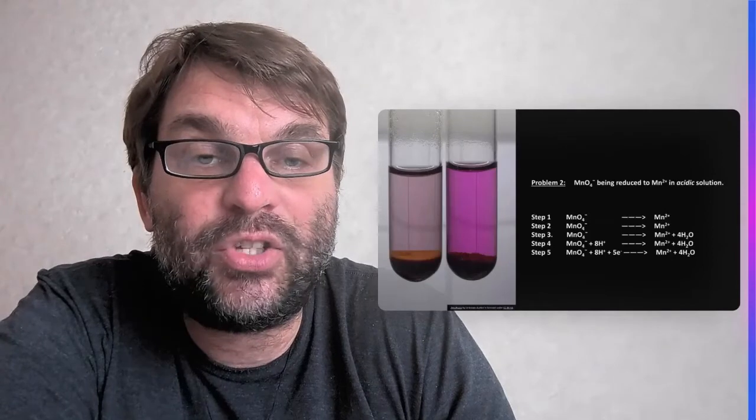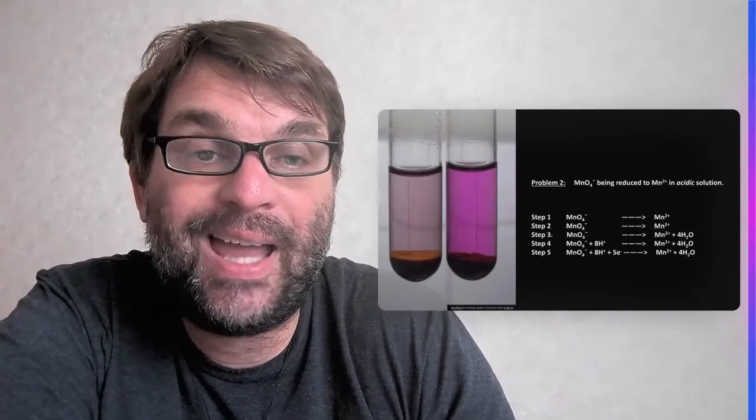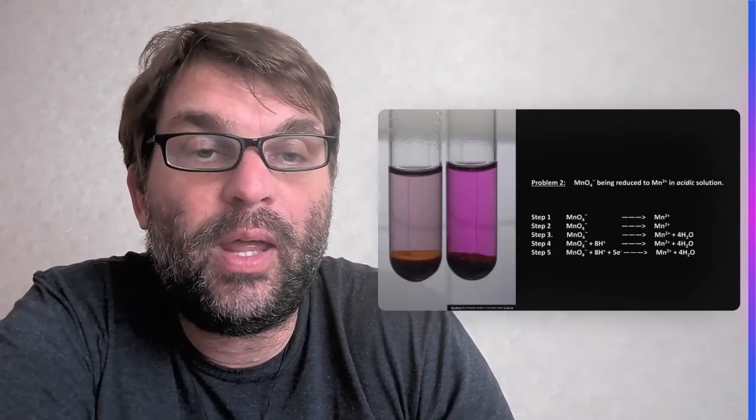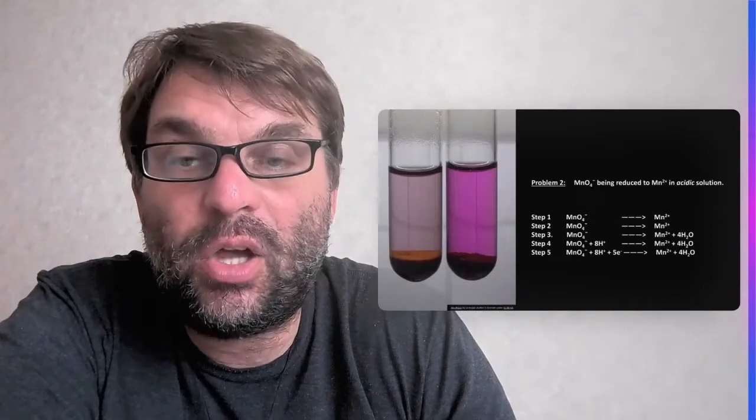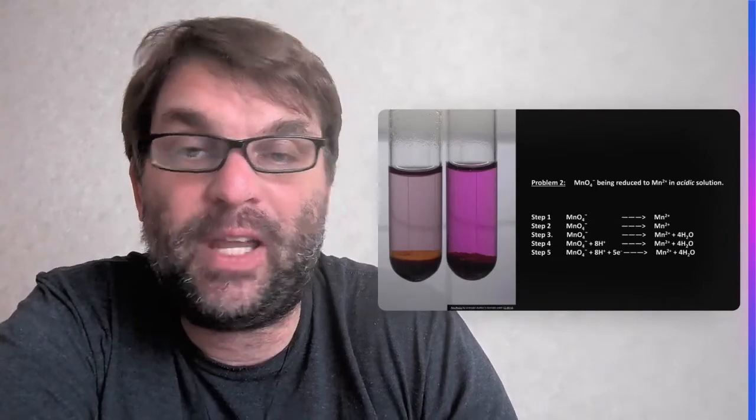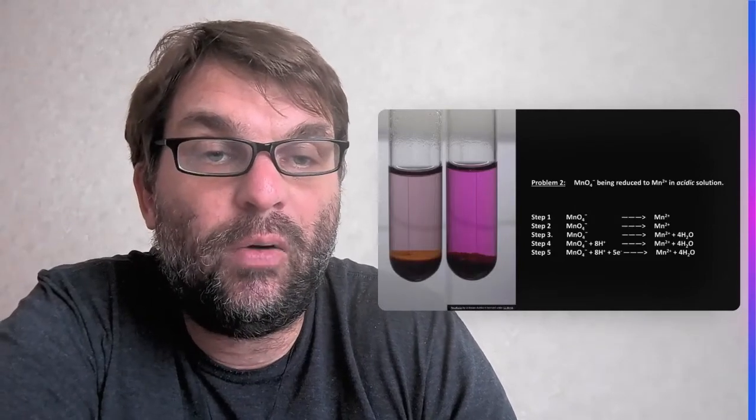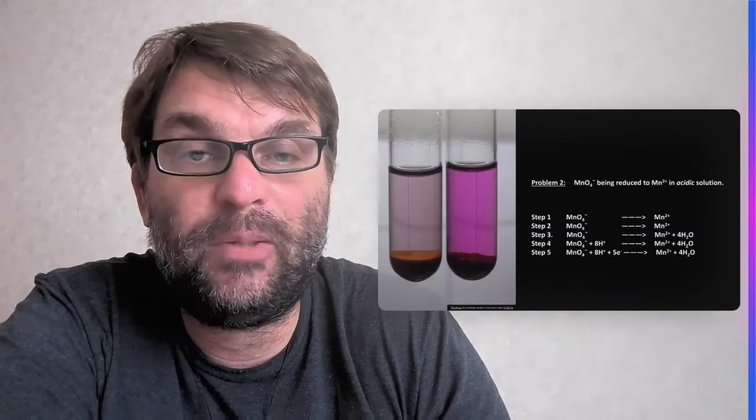So on the left-hand side, you have MnO4^- plus eight times positive one, so seven plus on that side, and you have only two plus on the right-hand side, so you have to add five electrons, so both sides now have the same charge of four plus. And that's step five, and it's now a balanced half equation.